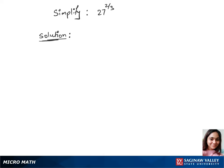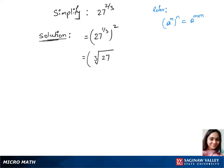To simplify 27 to the power of 2/3, we will use the rules and write our first step: 27 power 1/3, whole power 2. We just split the power, then write the next step as the cube root of 27, whole power 2, since 1/3 represents a cube root.